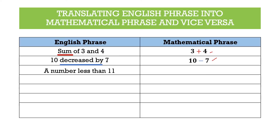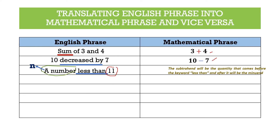Next, we have the phrase "a number less than 11." Since it is an unknown number, we use the letter n to represent it. "Less than" is under subtraction. We have to remember that the subtrahend is the quantity that comes before the keyword "less than," and after it is the minuend. So 11 is our minuend since it follows the word "less than," and the number n is our subtrahend. Our mathematical phrase is 11 − n.